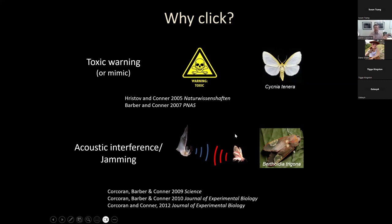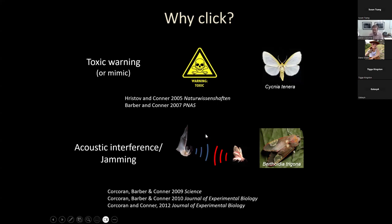But there are other hypotheses dating back to the 1960s suggesting that maybe the clicks of some moths could be interfering with the bat's echolocation system — what we refer to as the jamming hypothesis. To demonstrate jamming, there would have to be a clear indicator that the clicks themselves are in some way distorting the bat's perception through echolocation, making it difficult for them to capture the prey. This was the subject of my PhD work at Wake Forest University with Bill Connor and Jesse Barber, among others.